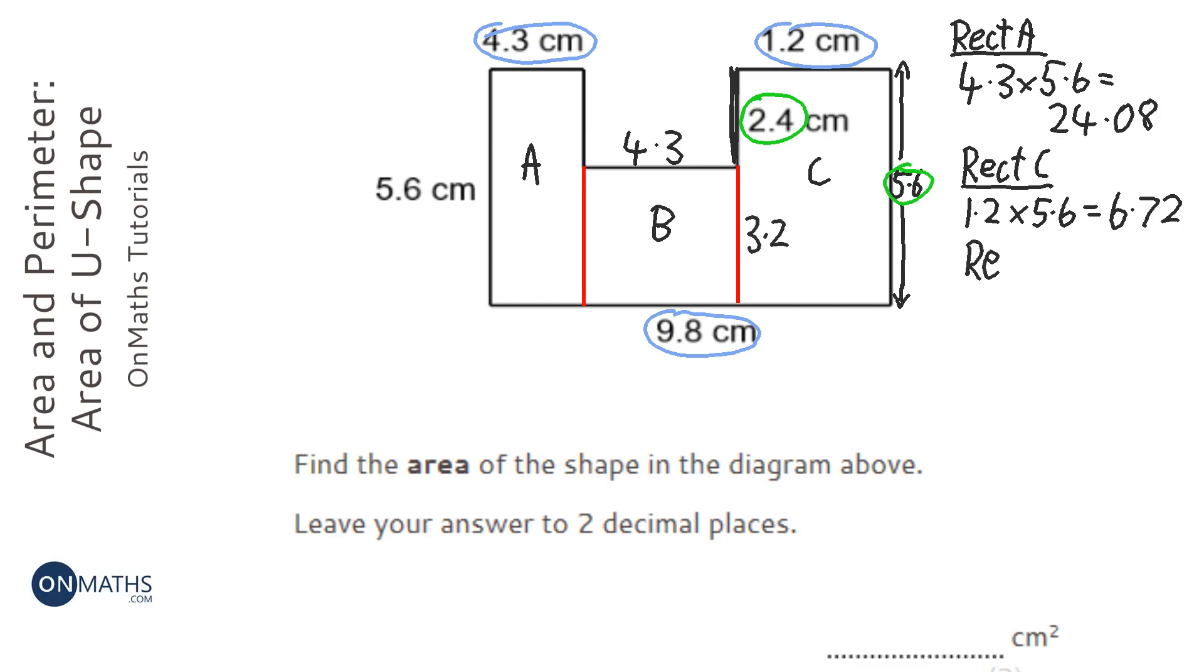So for rectangle B, it's going to be 4.3 times 3.2. On my calculator, 4.3 times 3.2, which is 13.76.